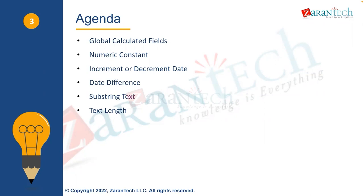There's also date difference, which gives you the difference between two dates. For example, if I need to find the current tenure of a particular employee, date one could be today's date and date two the hire date, giving you the tenure of that employee. You can also choose how to reflect it — in days, months, or years. Then there's substring text, which is straightforward: if I want only the first three or four letters of a text, I can define the start and end points.